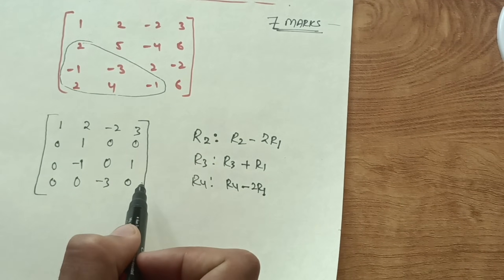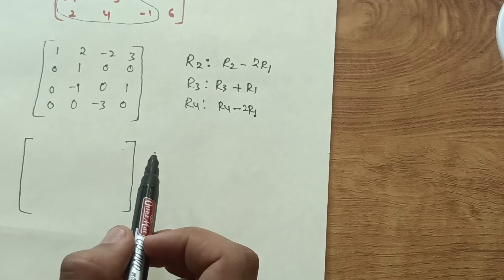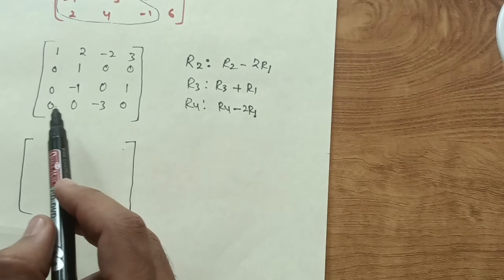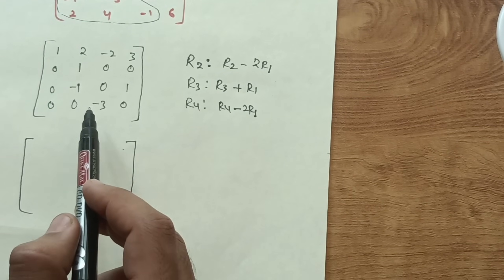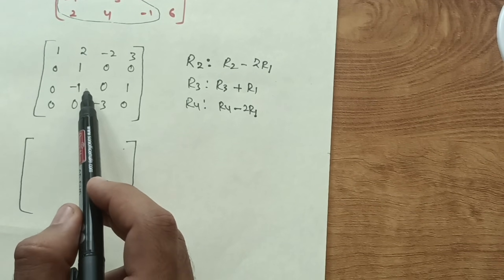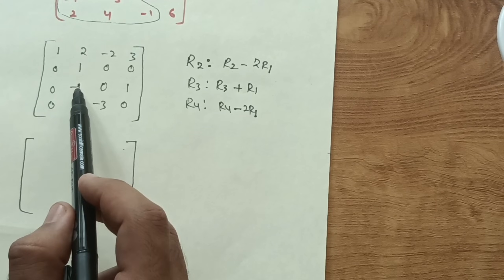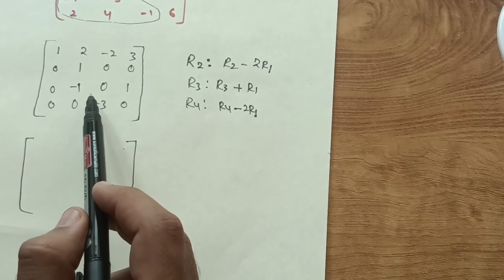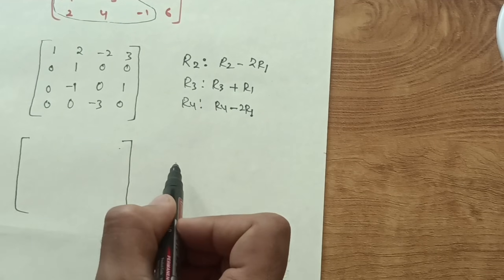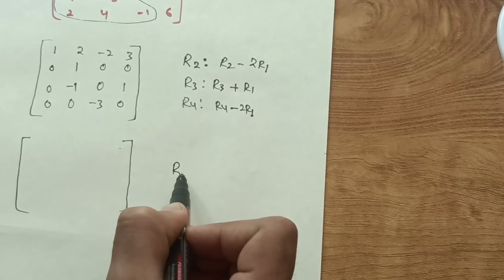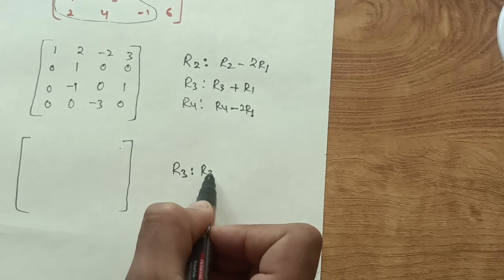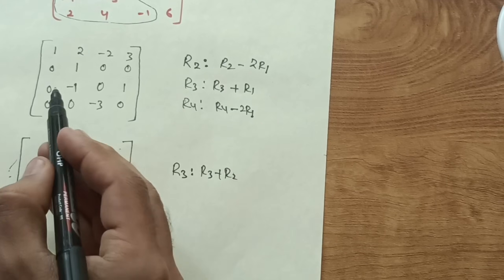The first step is complete. Now the three entries below the pivot in column 1 are all zero. Next, I need to make the remaining entries in column 2 become zero. I do the transformation R3 → R3 + R2.